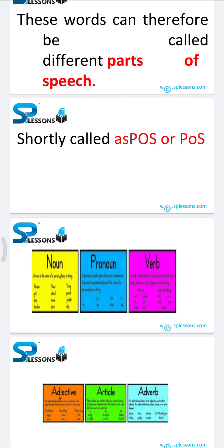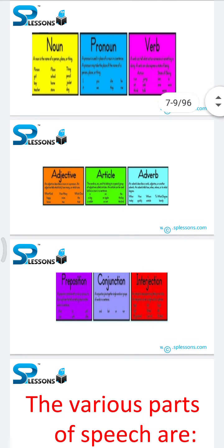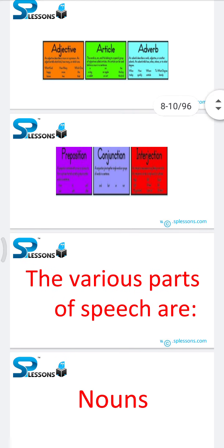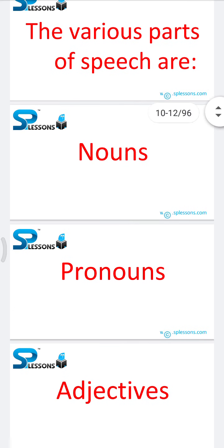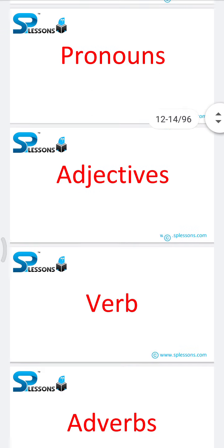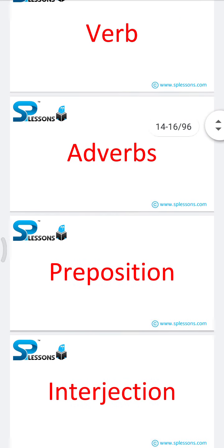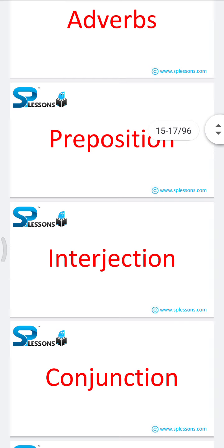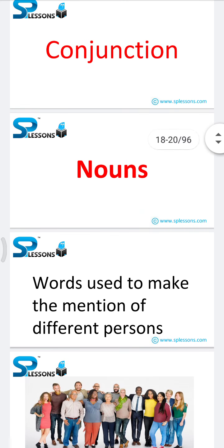Let's check the parts of speech through some images. The various parts of speech are: nouns, pronouns, adjectives, verbs, adverbs, prepositions, interjections, and conjunctions. Let's discuss each one by one.